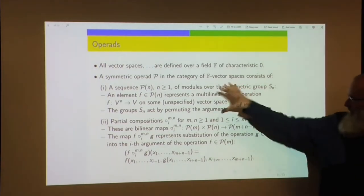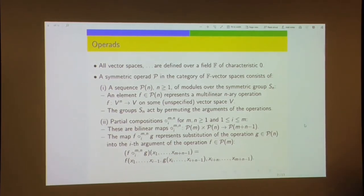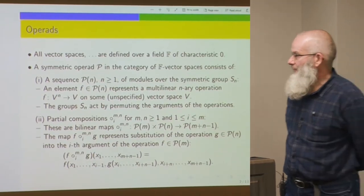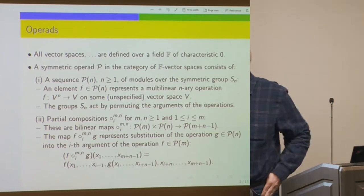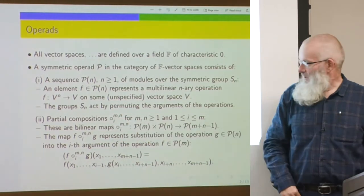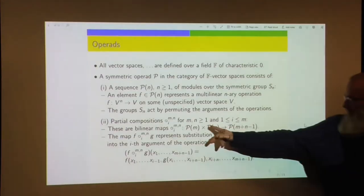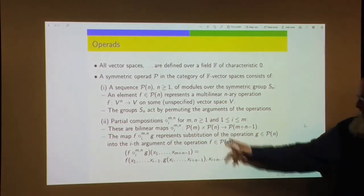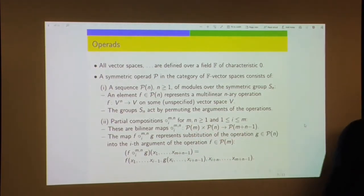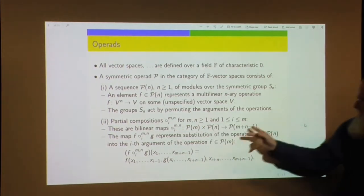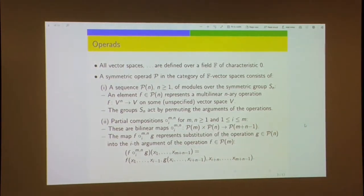We also have to compose operations, and we do that by what are called partial compositions using the circ symbol. It has two superscripts m and n, meaning I'm taking an operation of arity m and an operation of arity n, and combining them to produce an operation of arity m plus n minus 1. The subscript i tells me: I take the n-ary operation and stick it into the i-th argument of the m-ary operation.